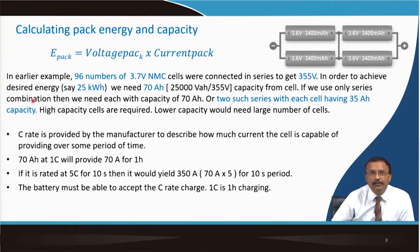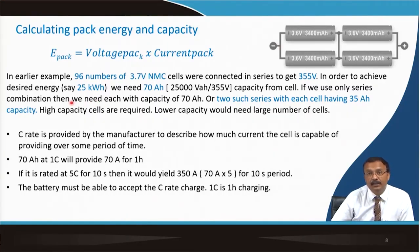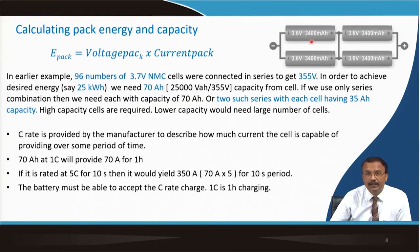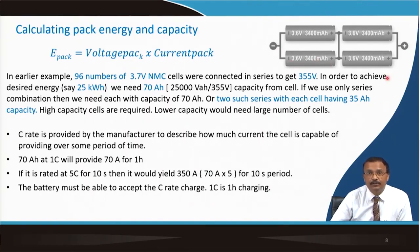Using only series combination, you need 70 ampere-hour cells. Alternatively, you can use two parallel series strings each with 35 ampere-hour cells to achieve the required capacity. High-capacity cells are preferable; lower capacity cells require a larger number of cells. Cylindrical cells can provide around 3.4 Ah at 3.6 V. Various configurations are possible to achieve the desired capacity level.